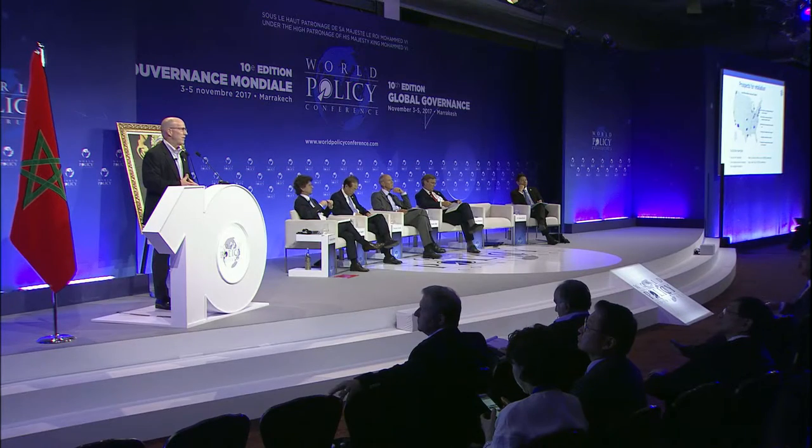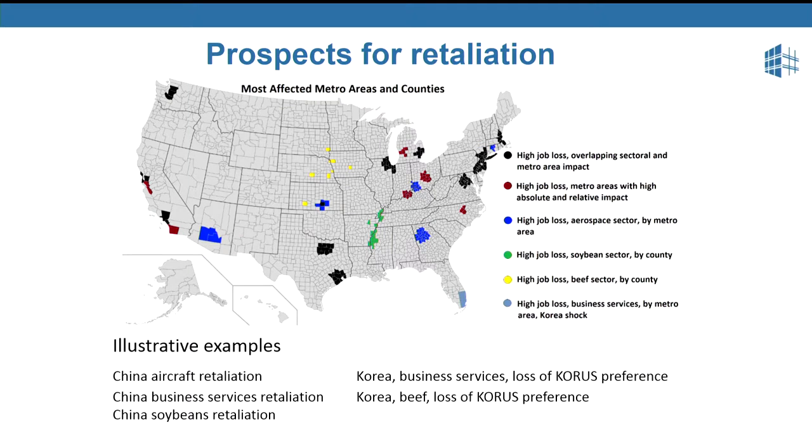In the case of aircraft, production is highly localized, so certain geographical areas are hit hard. In the case of business services, the areas hit under either of these actions basically constitute a map of the high-tech urban areas of the United States. But from a political economy standpoint, possibly the most interesting part is the two agricultural cases. You can see on the map there is a patch of green that runs from Mississippi through Arkansas, Tennessee, and into Missouri — that's the impact of a soybean embargo by China.